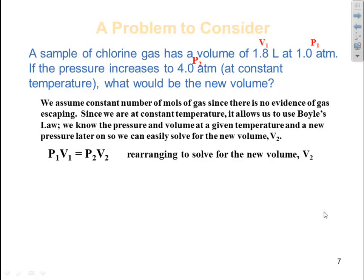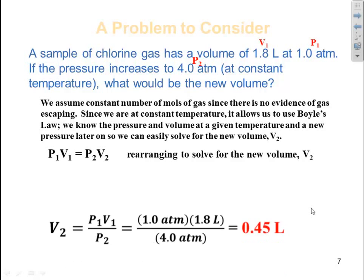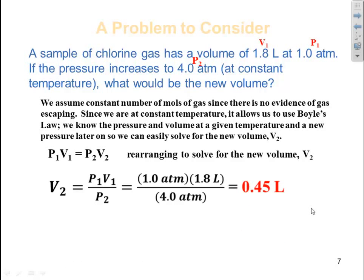So P1V1 equals P2V2. Rearranging to solve for the new volume V2, we obtain V2 equals P1 times V1 divided by P2. We plug in our first pressure, which is 1.0 atmosphere, our first volume, which is 1.8 liters, and our second pressure, which is 4.0 atm.